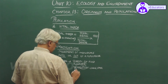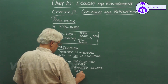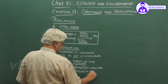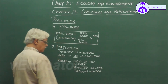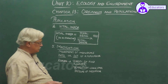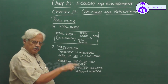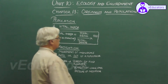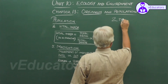Or it may happen due to the pressure of predation. Several causes bring about movement of individuals in a population, either into the population or out of the population. Migration therefore is of two types: immigration and emigration.